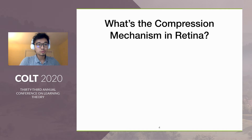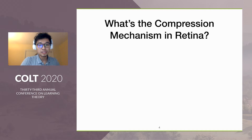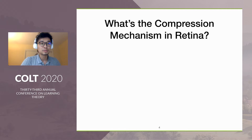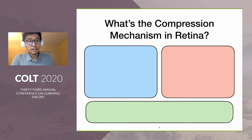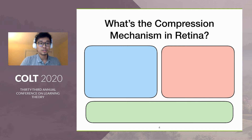The goal of this work is to provide a theoretical insight on why and how retina achieved fast adaptation and what could be the underlying compression mechanism. Due to the interdisciplinary nature of this problem, we have to set up the methodology properly. In particular, there are three important ingredients we have to take care of.